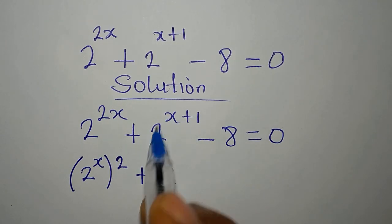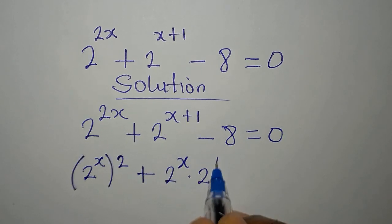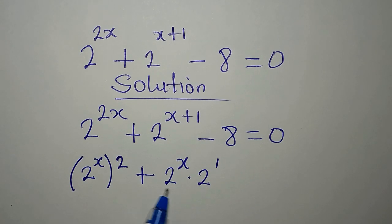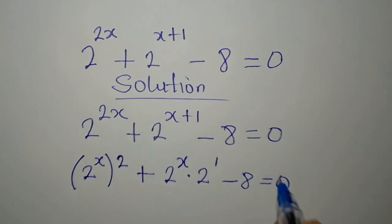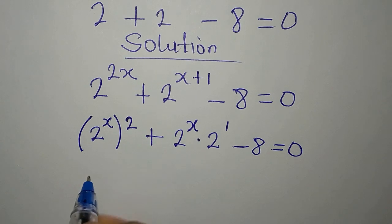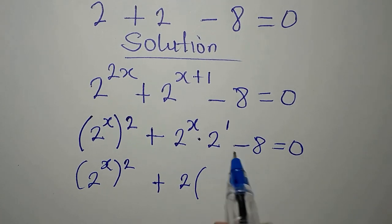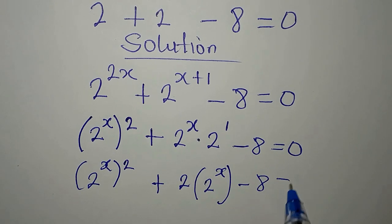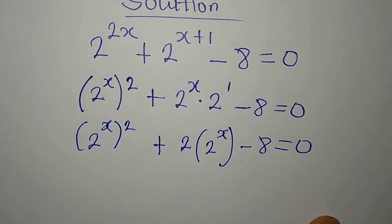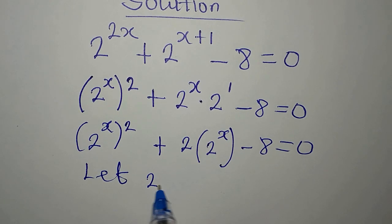Now I'm going to apply another law of indices. We have 2^(x+1) which is 2^x multiplied by 2^1. When multiplying terms with the same base, we add the powers. So we have 2^(2x) + 2·2^x - 8, and we equate everything to 0.